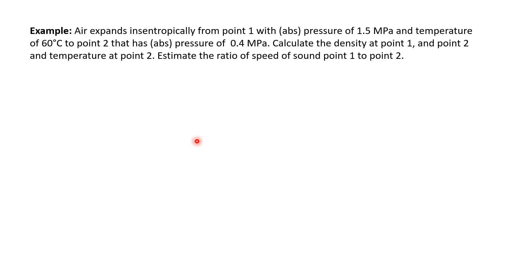Okay, another example. Air expands isentropically from point 1 with absolute pressure of 1.5 MPa and temperature of 60°C to point 2 that has absolute pressure of 0.4 MPa. Calculate the density at point 1 and point 2.